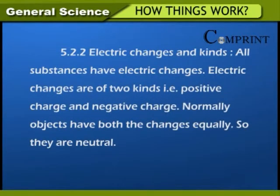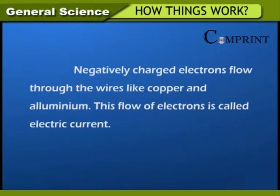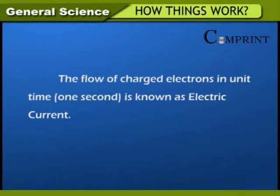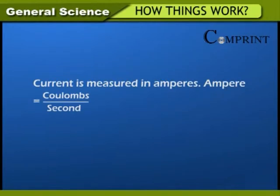Electric charges and kinds. All substances have electric charges, which are of two kinds: positive charge and negative charge. Normally, objects have both charges equally and so they are neutral. Electric charge is measured in coulombs. Negatively charged electrons flow through wires like copper and aluminum — this flow of electrons is called electric current. The flow of charged electrons per unit time (one second) is known as electric current. If Q coulombs of current pass through a wire in T seconds, the electric current I = Q/T. The unit of current is coulombs per second, also known as an ampere. Current is measured in amperes; one ampere equals one coulomb per second.